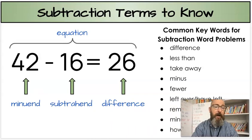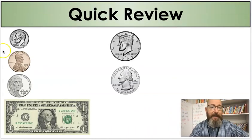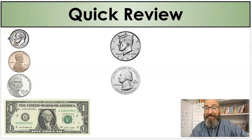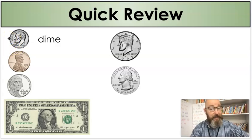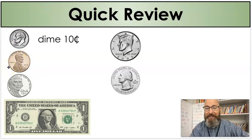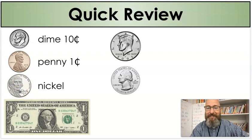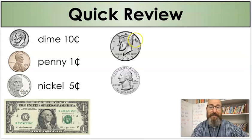All right, we're going to do one more review of our coins that we're going to be looking at today. We have our first coin. What is that? It's a dime. How much is a dime worth? Ten cents. Our next coin here, it's a penny. And how much is a penny worth? One cent. What's our next coin? It's a nickel. And how much is a nickel worth? Five cents.